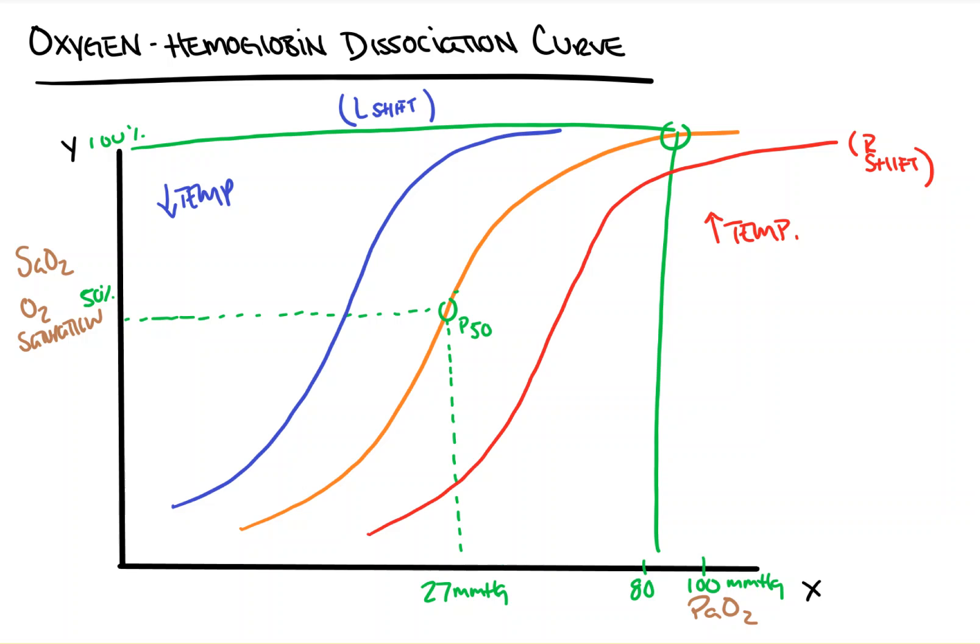Next we have the Bohr effect, where a decrease in pH will right shift our hemoglobin and an increase in pH will left shift it. Remember, a decrease in pH is the same thing as saying an increase in our acidity or an increase in protons. Let's talk about why this makes sense. What would be a major reason for our blood becoming more acidic? If you said anaerobic metabolism, you'd be right. Say you have an infection and we decrease our perfusion to our tissues because we're shocky, and now we're producing lactate, our blood's becoming more acidic, our pH is dropping.